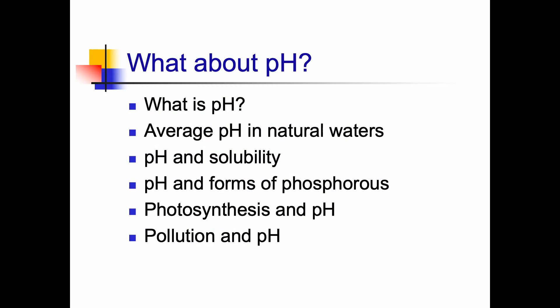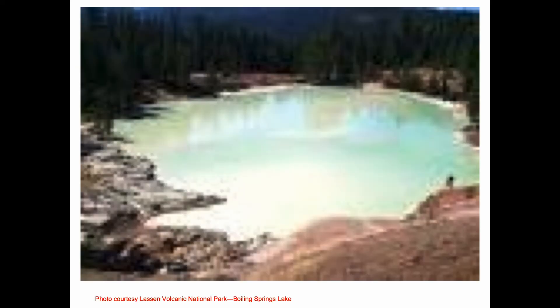Pollution and pH — if you've got pollution and lots of vegetation, photosynthesis drives pH up. This is Lassen Lake at Volcanic National Park — pH 2.0. You do not want to stick your foot into this lake.